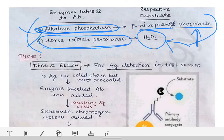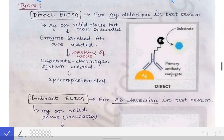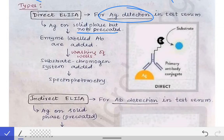Now, the types of ELISA. First is direct ELISA, which is used for antigen detection in the test serum. Here, the antigen is in the solid phase but not pre-coated — meaning the well is not already pre-coated with antigen. The patient's serum is added and the antigen present in it gets coated over the well surface on its own.